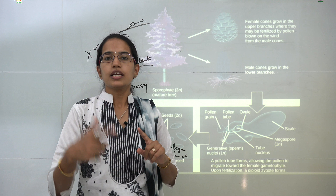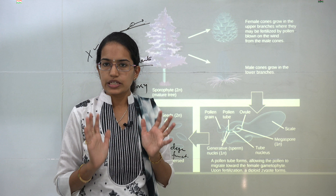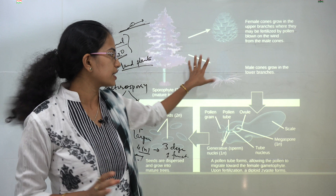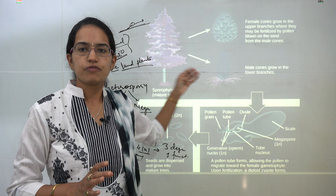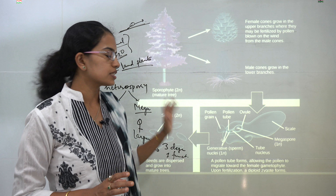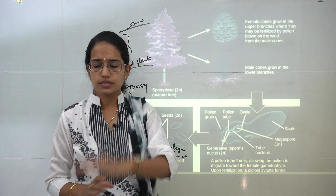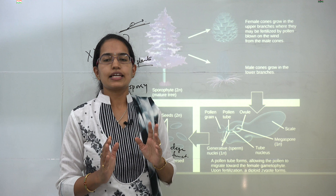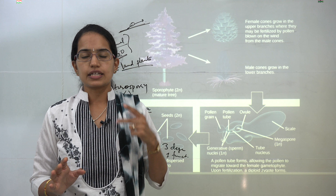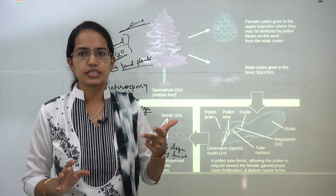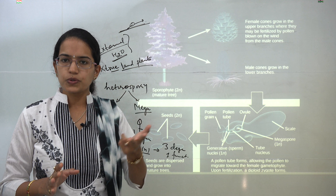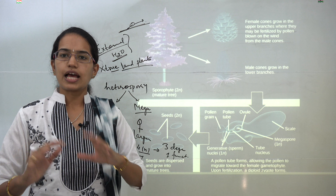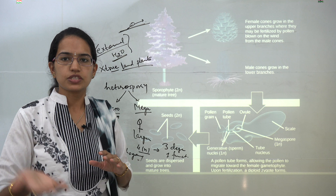The female cone classically releases resin, which is a kind of semi-sticky material. When pollination occurs by wind and this resin is exposed to air, it solidifies on the surface and fertilization takes place inside it. Finally, you have seeds that are formed and seed dispersal takes place. This maturity takes around 26 months for the conifers.